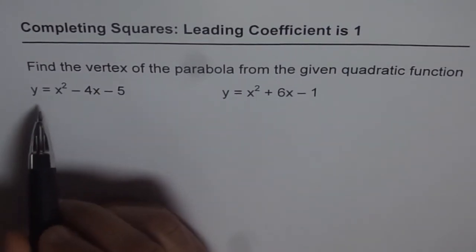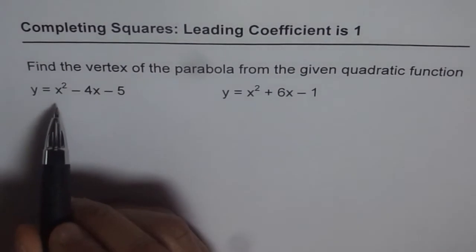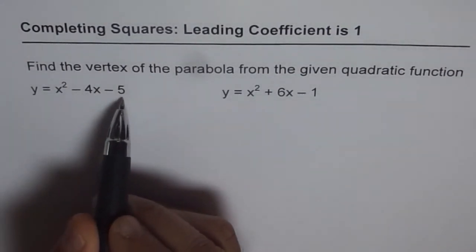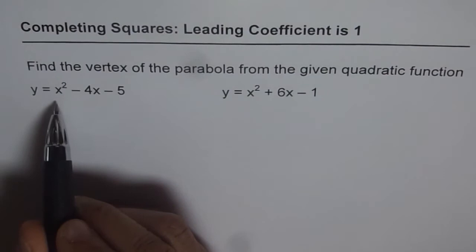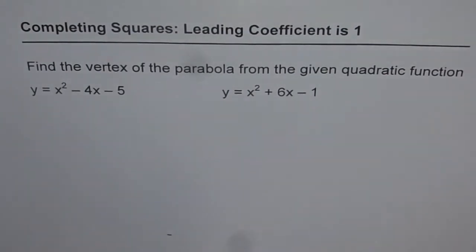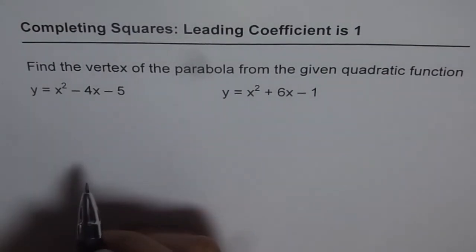Now, as you know, in this particular equation, y equals to x squared minus 4x minus 5, the leading coefficient is 1, the coefficient of x squared. So in this case, the process is slightly simpler, one step less than the normal process, where the leading coefficient is not 1.